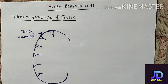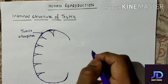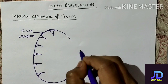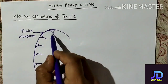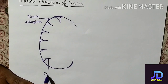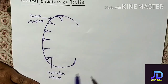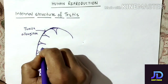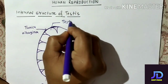Now because of the septa formation it will give rise to some compartments, and these compartments are known as testicular lobules.